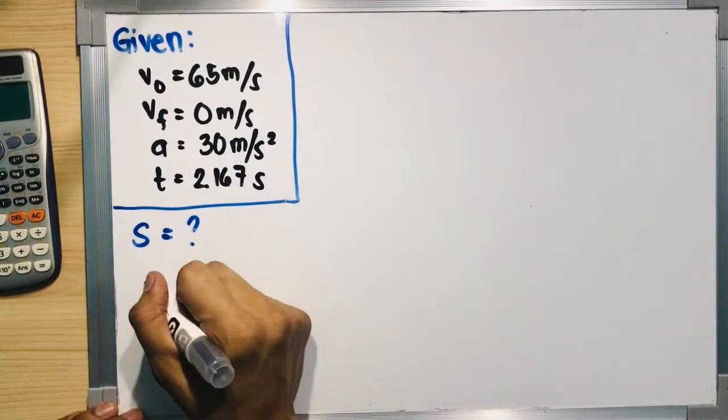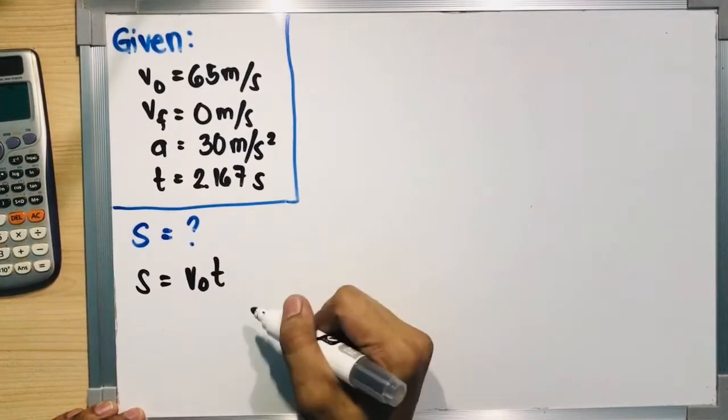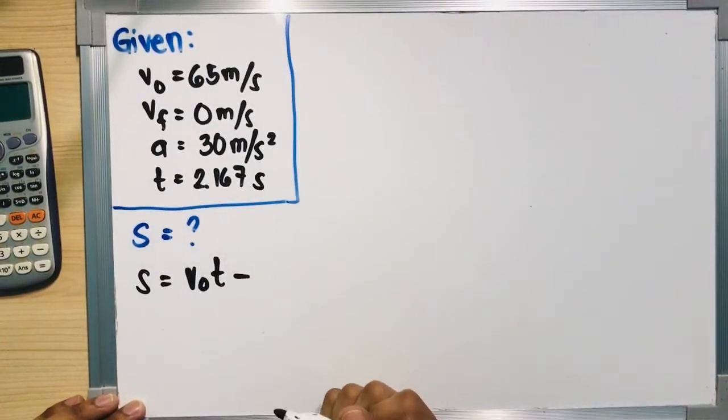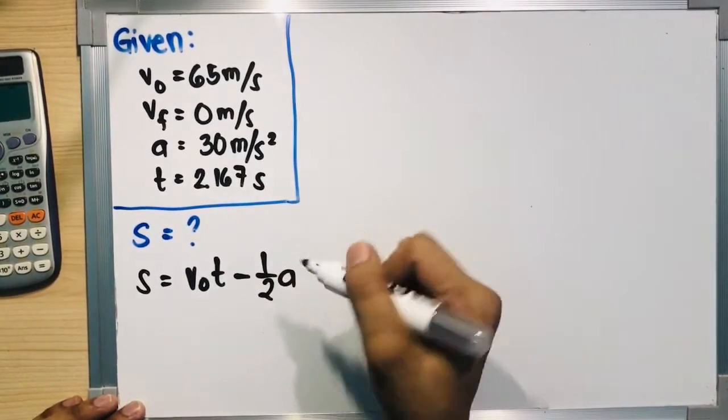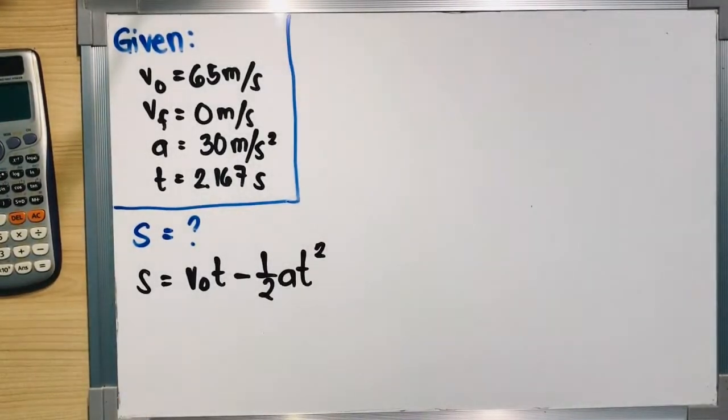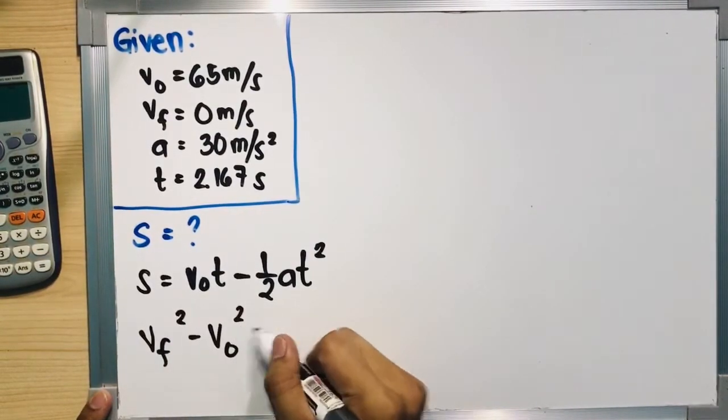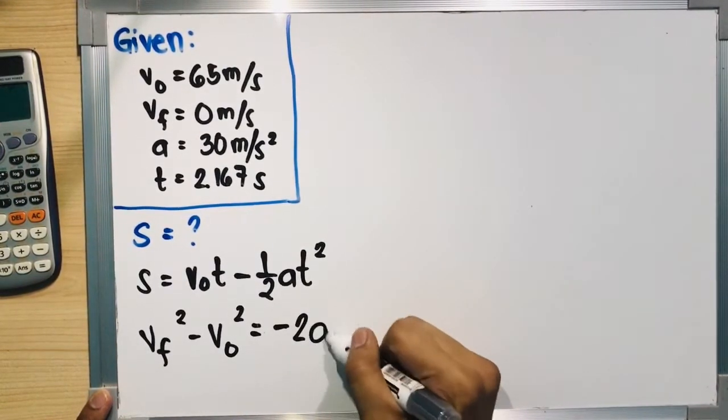As we know, the distance is making use of the first kinematic equation, which is s equals v₀t minus one-half at squared. The sign is automatically negative because the car is decelerating. We can also use the third equation, which is vf squared minus v₀ squared is equal to minus 2as.